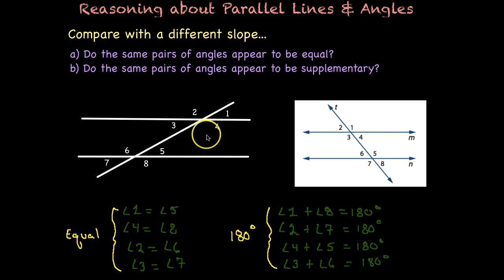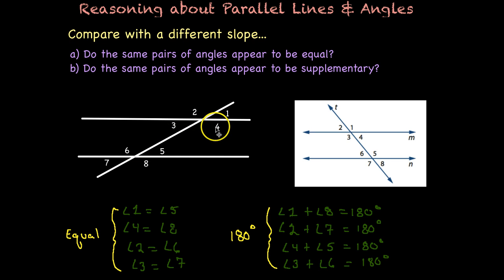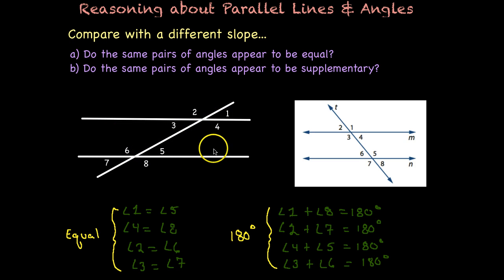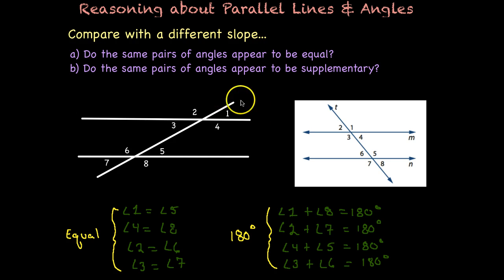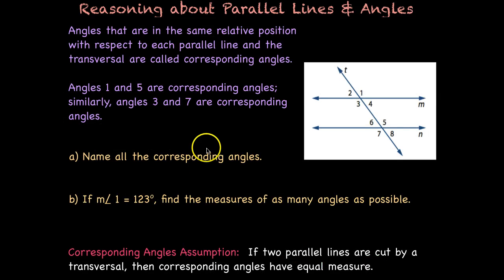How about 180 degrees? We said one and eight — those look like they might sum to 180 degrees. Two and seven. Here are our interior angles: four and five, and three and six. Remember that interior is in between these two lines — think of it as a train track. Inside, underneath the train, that's the interior, whereas on the outside of the train tracks, that's the exterior.